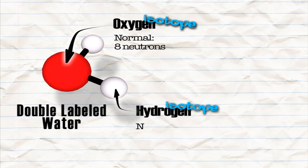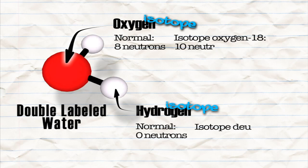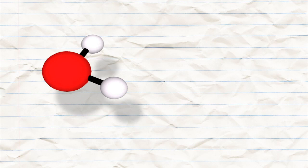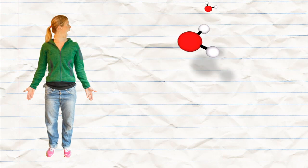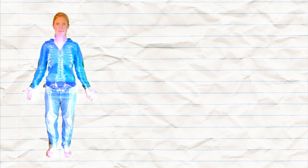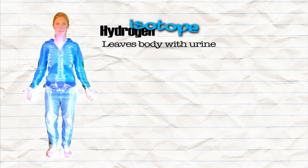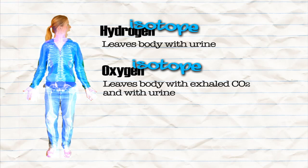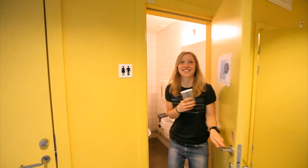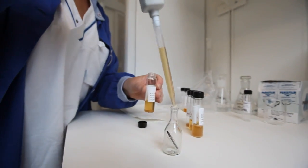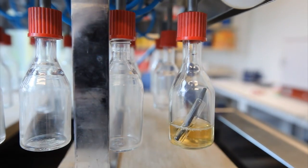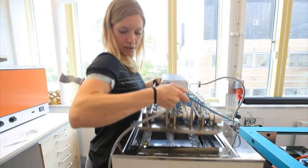An isotope has the same number of protons in the core but differs in the number of neutrons. This water will then mix with the water already in our bodies and follow the water's normal pathways. All the marked hydrogen will go out with the urine, along with some of the oxygen. The trick is that we exhale some of the marked oxygen as carbon dioxide — more so if we train, simply because we breathe more when we train. By detecting how much labeled oxygen and hydrogen remain in our urine, we can calculate how much energy we have used.